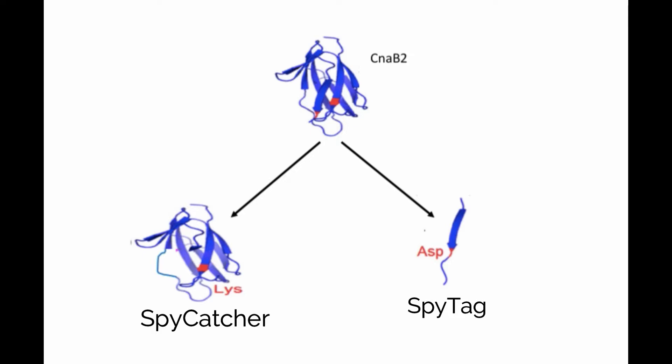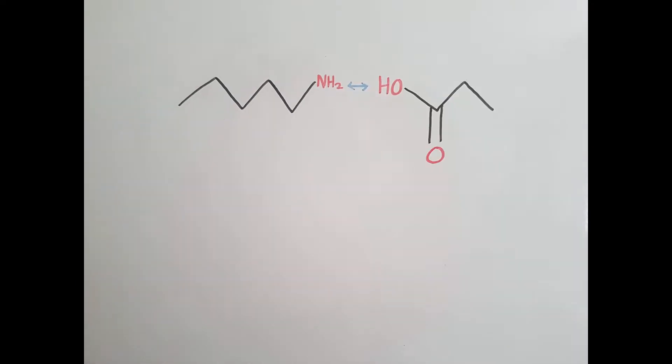The covalent intermolecular isopeptide bond forms simply through the nucleophilic attack by a lysine residue on a SPI-CATCHER part to the carbonyl group of an aspartic acid residue on the SPI-TAG. This releases a water molecule in the process.